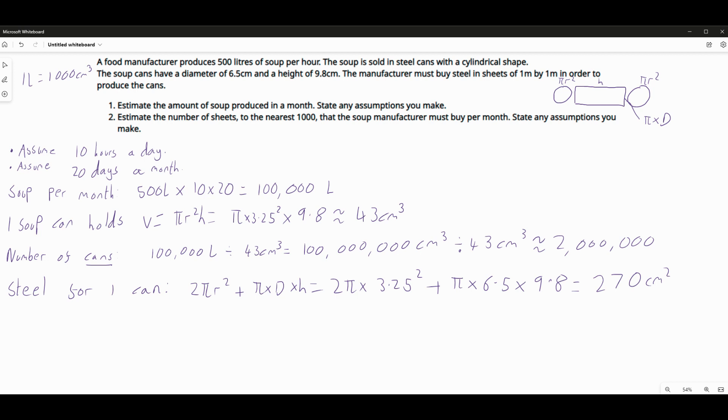So that's the steel needed for one can, but I don't need one can, I need 2 million. So the total steel will be the 2 million cans that I need multiplied by the 270 centimeters squared of steel that I require. Now when I do this I'll find that the answer is going to be 540 million. That's quite a big number and the reason it's so big is because we're dealing in centimeters squared. So what we'll do is we'll just convert that into meters squared.